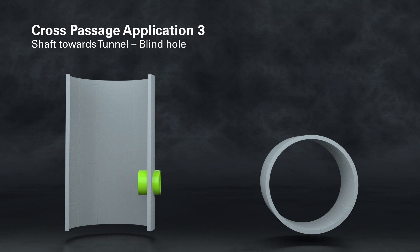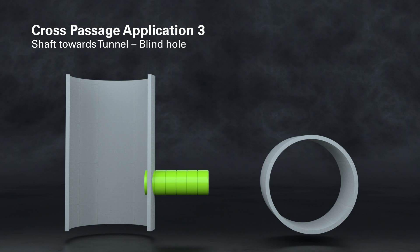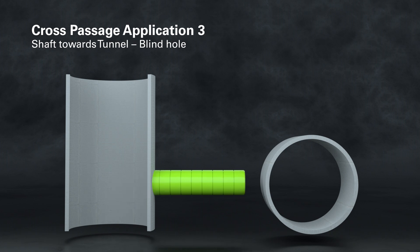In some cases, the construction of the cross-passage has to be carried out without impact on the target tunnel. The use of a retractable machine concept allows excavation of the cross-passage until a predetermined end position close to the tunnel and the retraction of the tunneling machine back to the launch shaft. Final connection of the cross-passage to the tunnel can be made at a later stage, for example by means of a grout block.